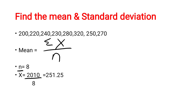Mean is nothing but the average. To calculate the mean for raw data or ungrouped data, the formula is x̄ = Σx / n, where n is how many values are given. Counting the values: 1, 2, 3, 4, 5, 6, 7, 8 — so your n value is 8.